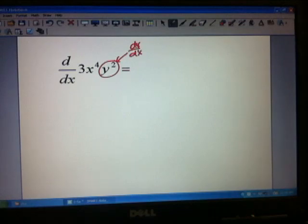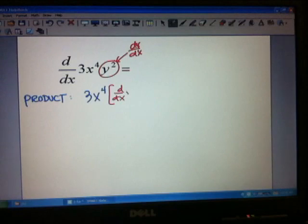So the product rule tells me that this is going to be 3x to the 4th times the derivative of y squared plus y squared times the derivative.